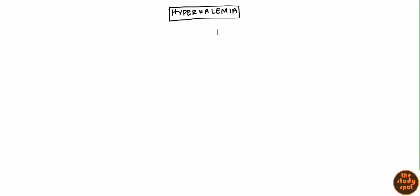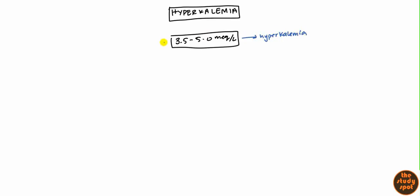Hello, welcome to today's video. We're going to be looking at hyperkalemia. As always, let's begin with a definition. The normal potassium level in the blood is anywhere between 3.5 to 5.0 mEq per liter. Anytime it's above 5.0 mEq per liter, that's called hyperkalemia. And anytime it's below 3.5 mEq per liter, we call that hypokalemia. That's a pretty easy, straightforward definition.